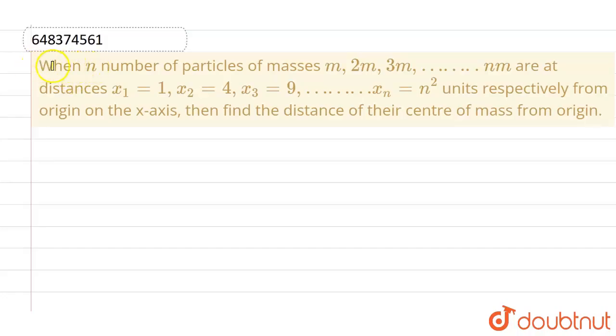this given question: when n number of particles of masses m, 2m, 3m, and so on up to nm are at distances where the first particle is at x₁ = 1, x₂ = 4, x₃ = 9, and so on, and the last particle xₙ is at n² units respectively from origin on the x-axis, then we have to